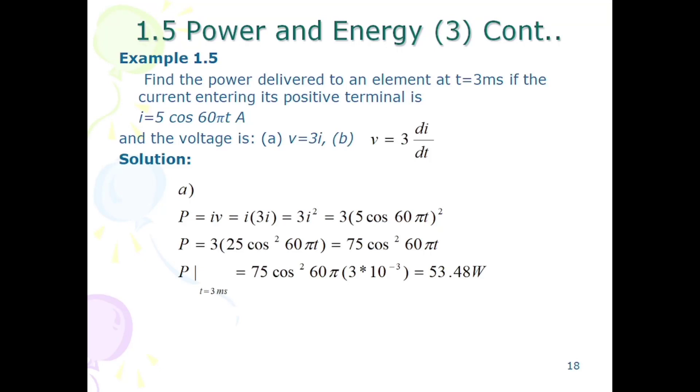Now we have to start example 1.5. Find the power delivered to an element at t equals 3 milliseconds if current entering its positive terminal is given as i equals 5 cos 60 pi T amperes, and voltage as part A is v equals 3i, and in part B voltage is v equals 3 di by dt.